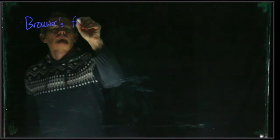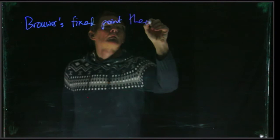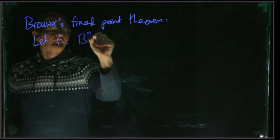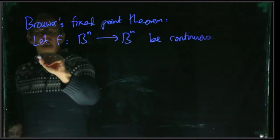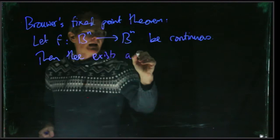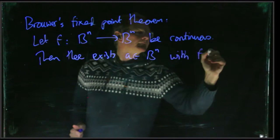In this video I'm going to explain Brouwer's fixed-point theorem. This says let f be a map from the n-dimensional ball, the n-dimensional closed ball to itself, and it's supposed to be continuous. And then there's a fixed-point. In other words, there exists a in B^n with f(a) being equal to a.